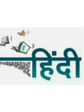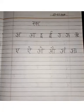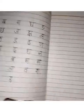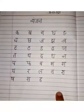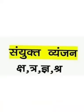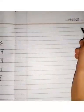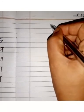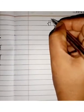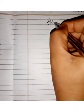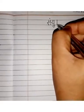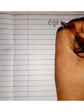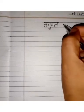Good morning children. Today is your Hindi class. Children, you already have done Swar and Vyanjan in your classwork copy. So today you have to write Sanyukth Vyanjan in your classwork copy. You have to mention the date here and then write Sanyukth Vyanjan.